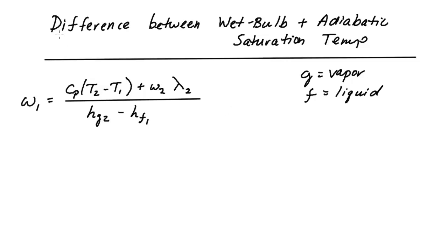In this video I want to explain quickly the difference between the wet bulb temperature that you'd measure with a sling psychrometer and the adiabatic saturation temp that we just figured out.